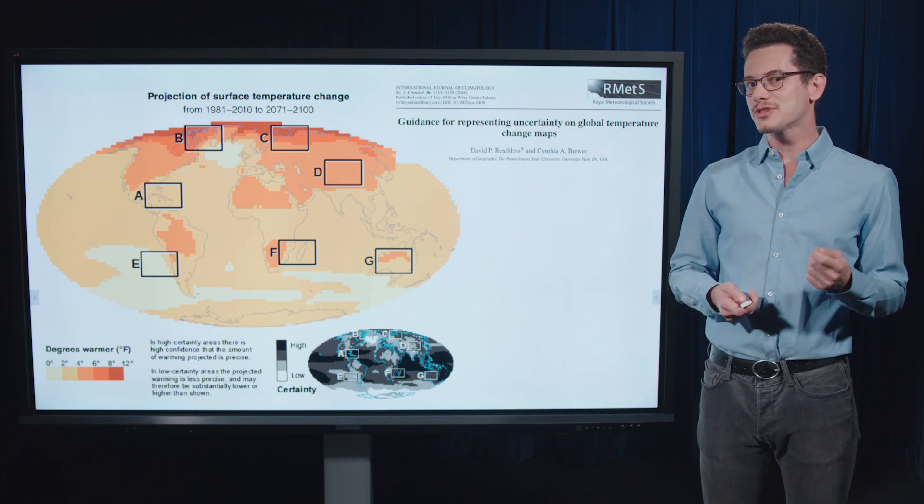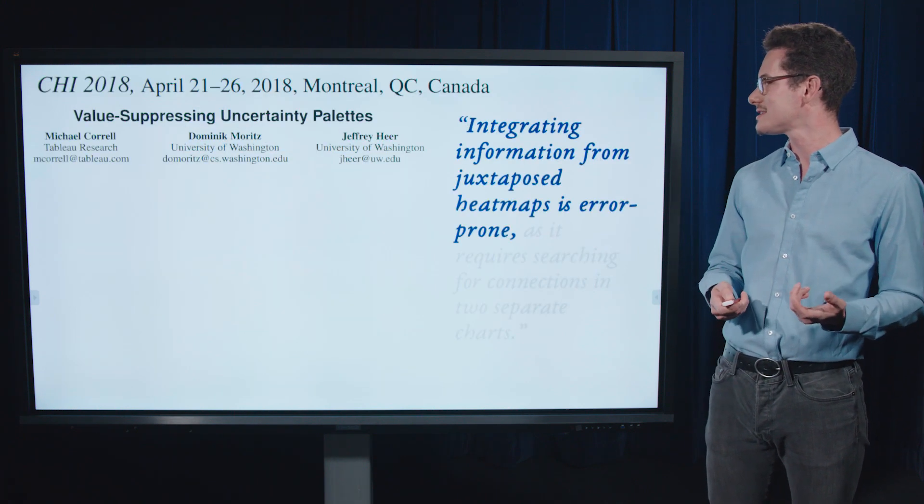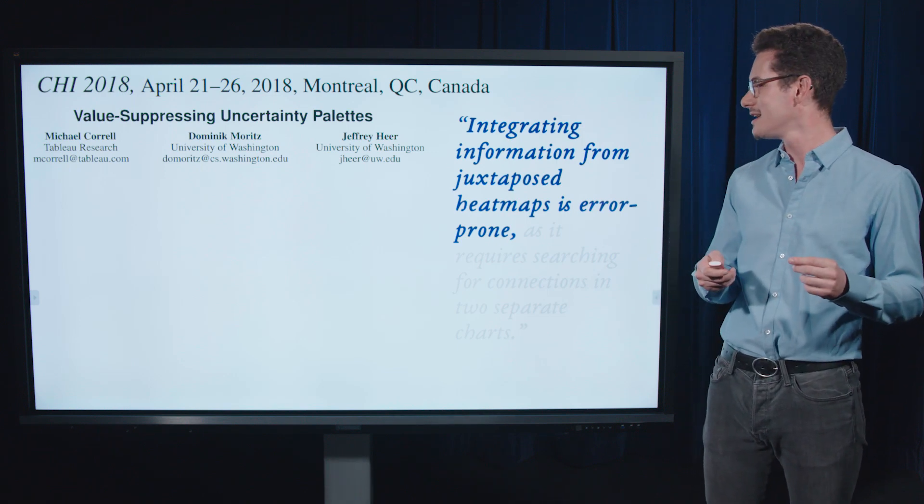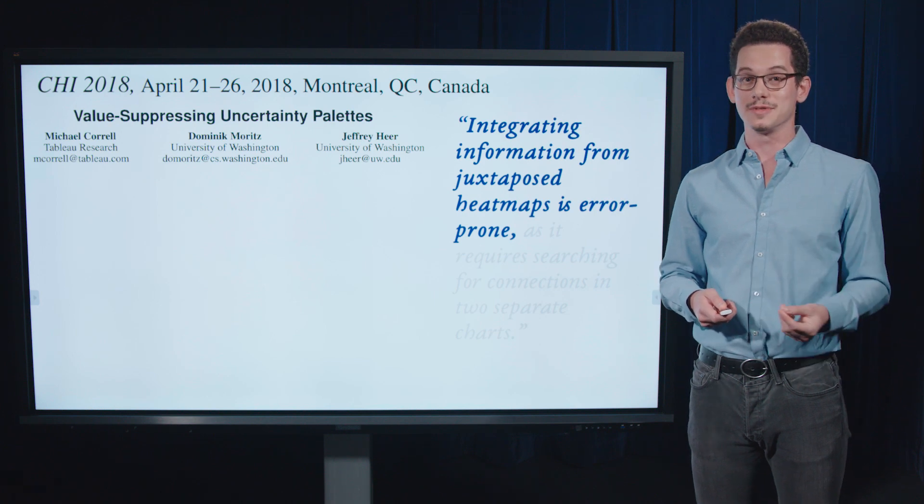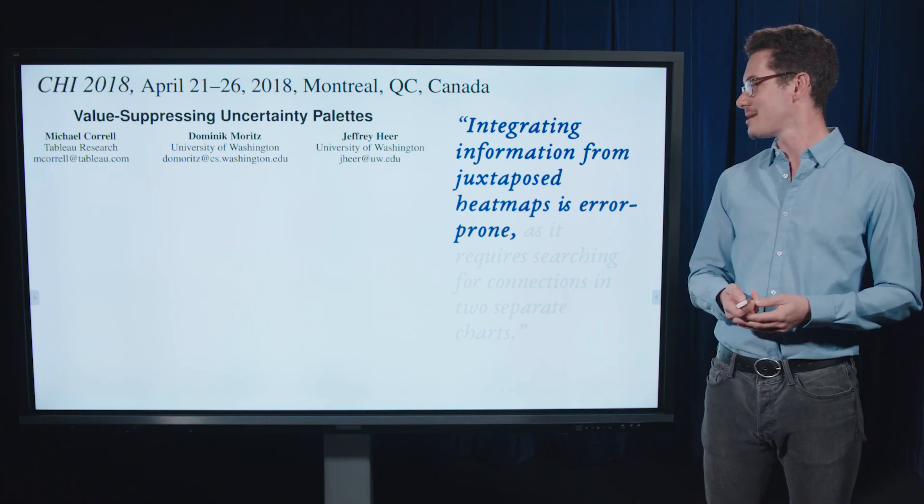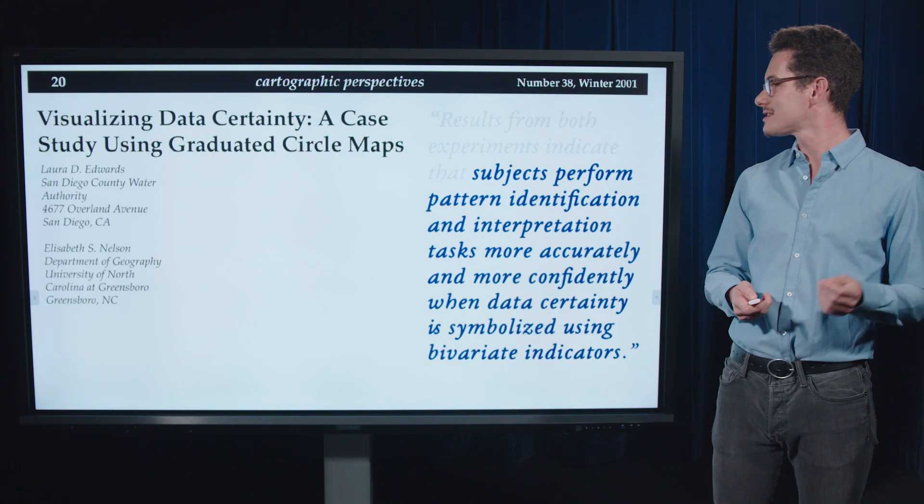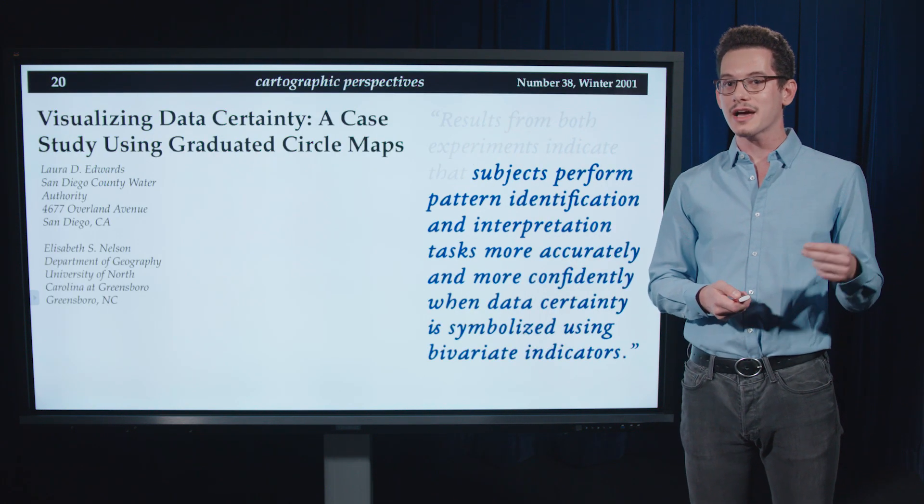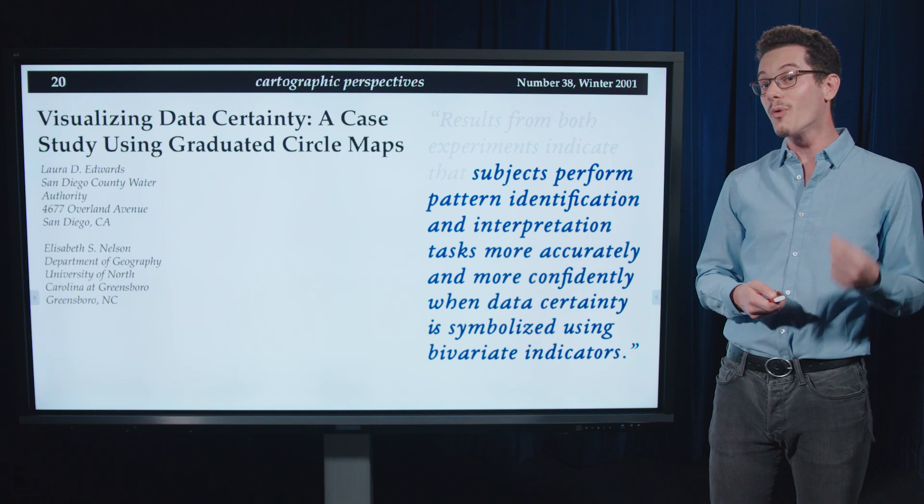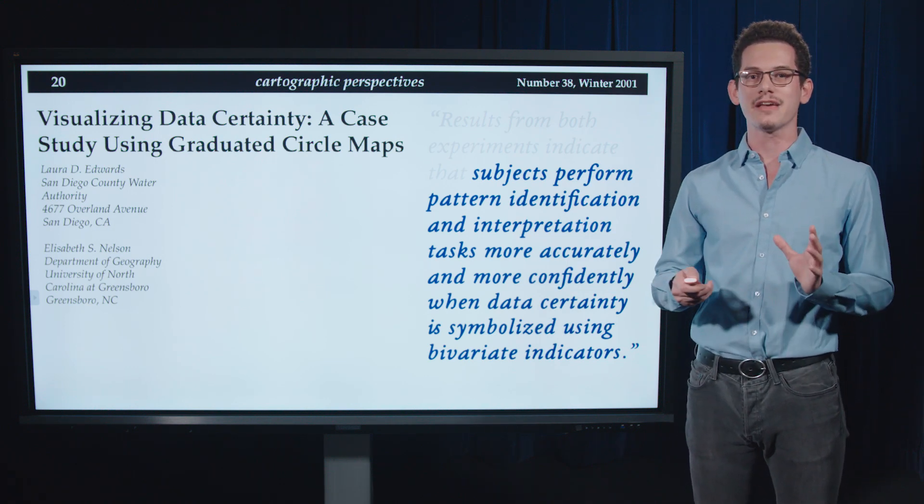And while this is the most straightforward way of depicting the uncertainty of the forecast, there's research that suggests that integrating information juxtaposed across those two maps is error-prone. In fact, subjects in experiments make more errors than subjects with different kinds of uncertainty visualization. And in fact, subjects perform better pattern identification and interpretation more accurately, more confidently when they're shown the data certainty in a bivariate form.